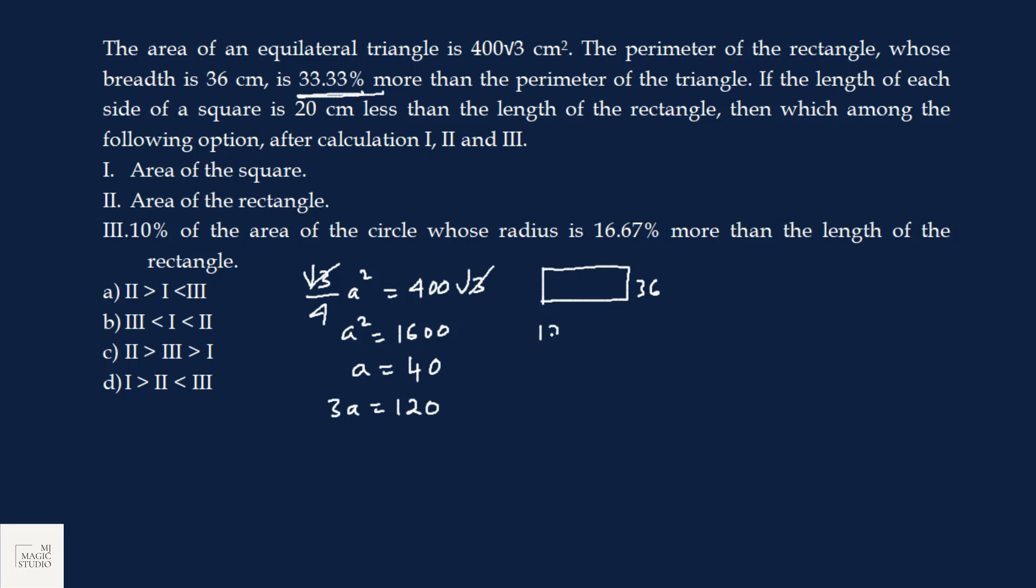Perimeter of the triangle is 120. 33.33 percent more means one third more. So, perimeter of rectangle is 120 plus one third of 120 is 40, that is 160. So, this is 36, 72. We would be left with 88. Then length would be 88 by 2, that is 44. The length of each side of the square is 20 centimeter less than the length of rectangle. We have a square whose side is 20 centimeter less than length. That is 24.